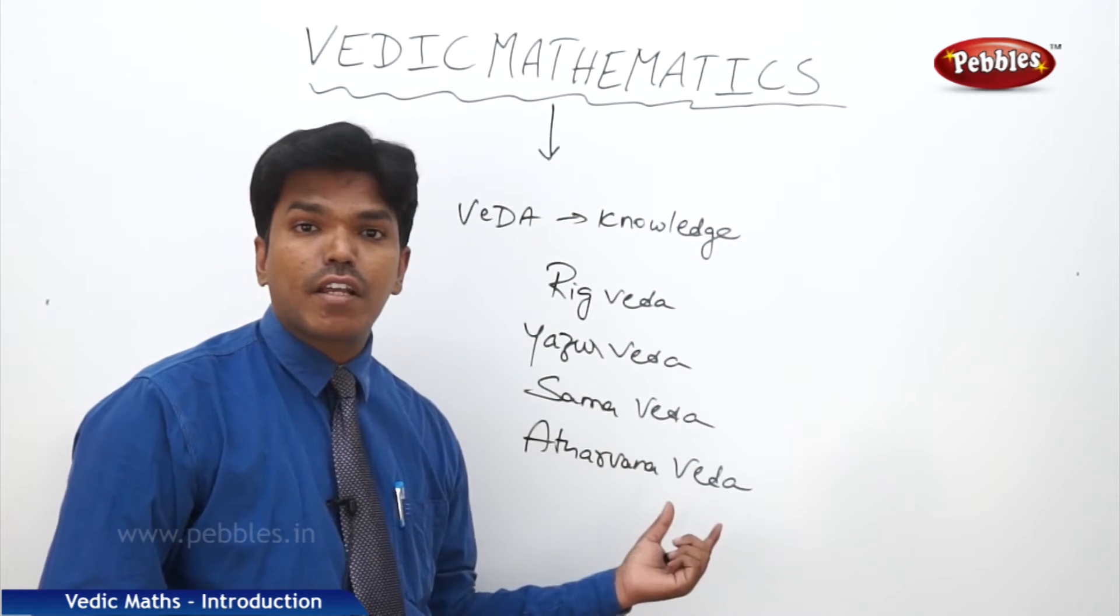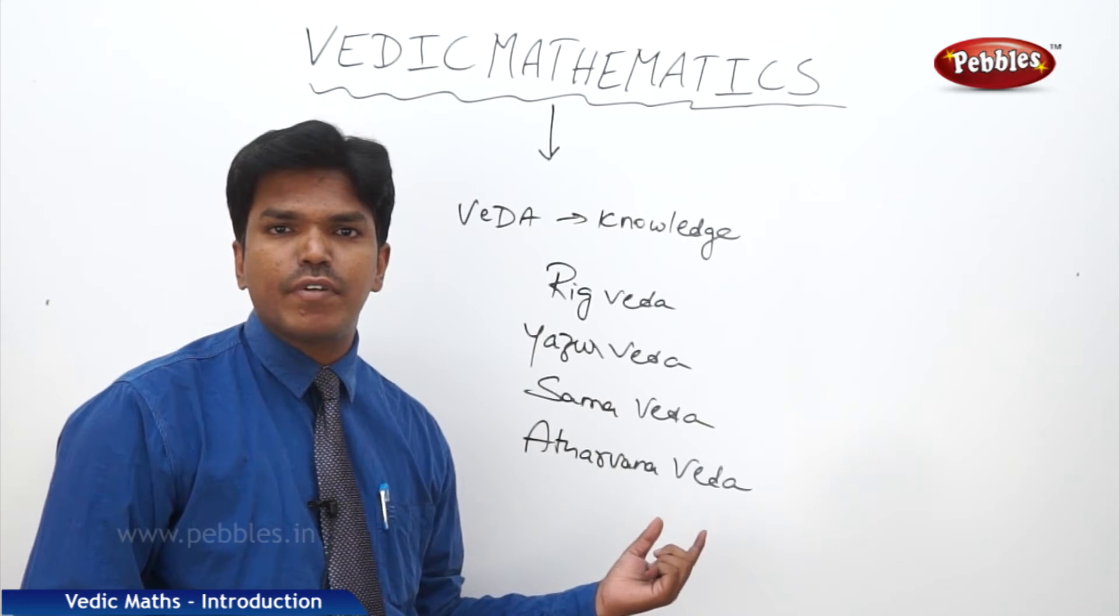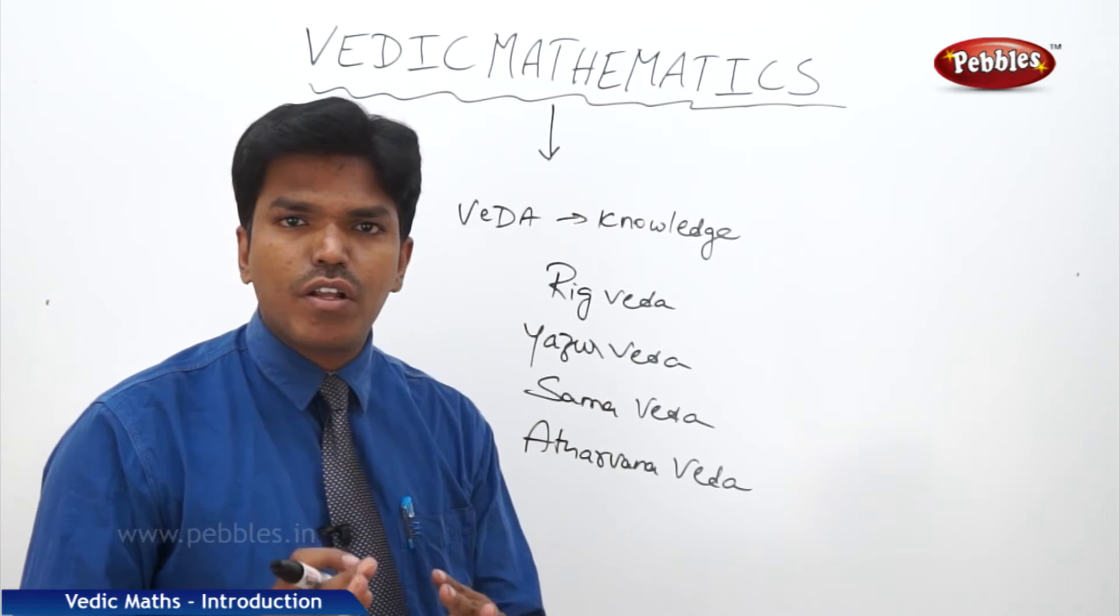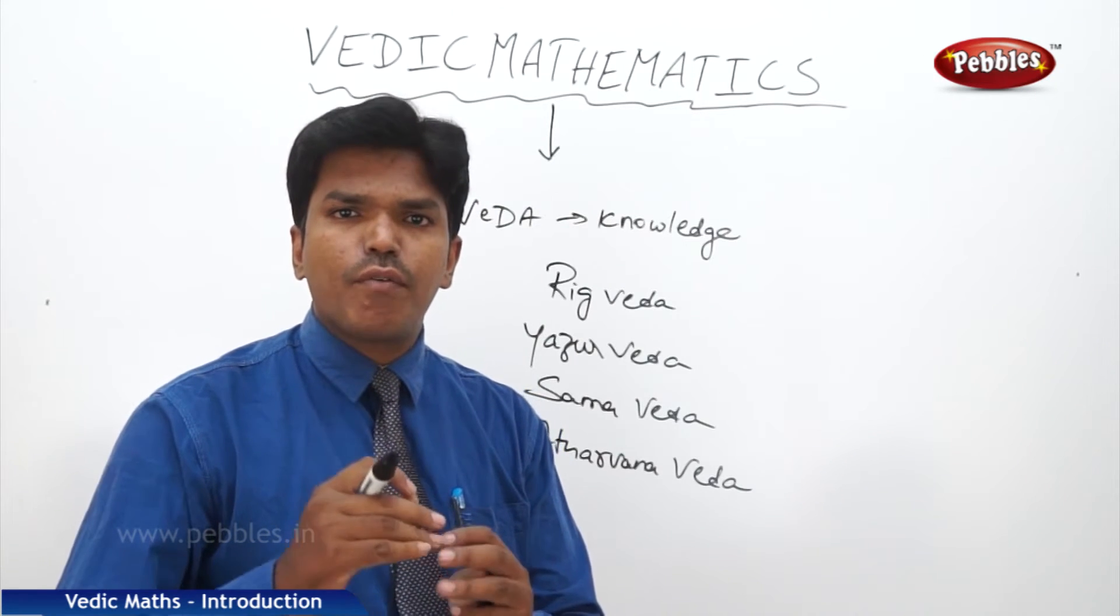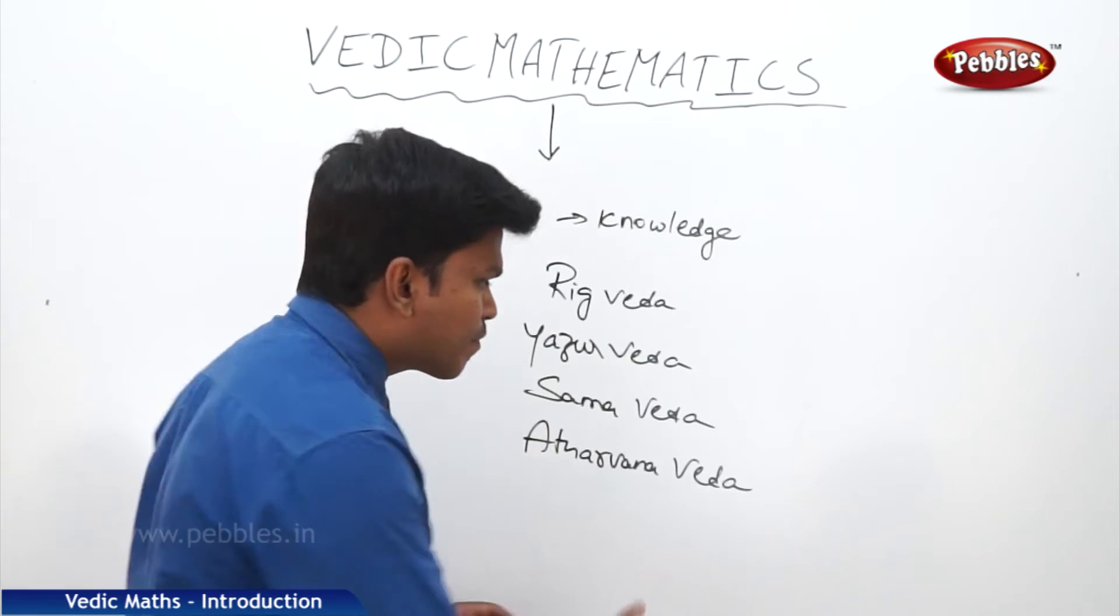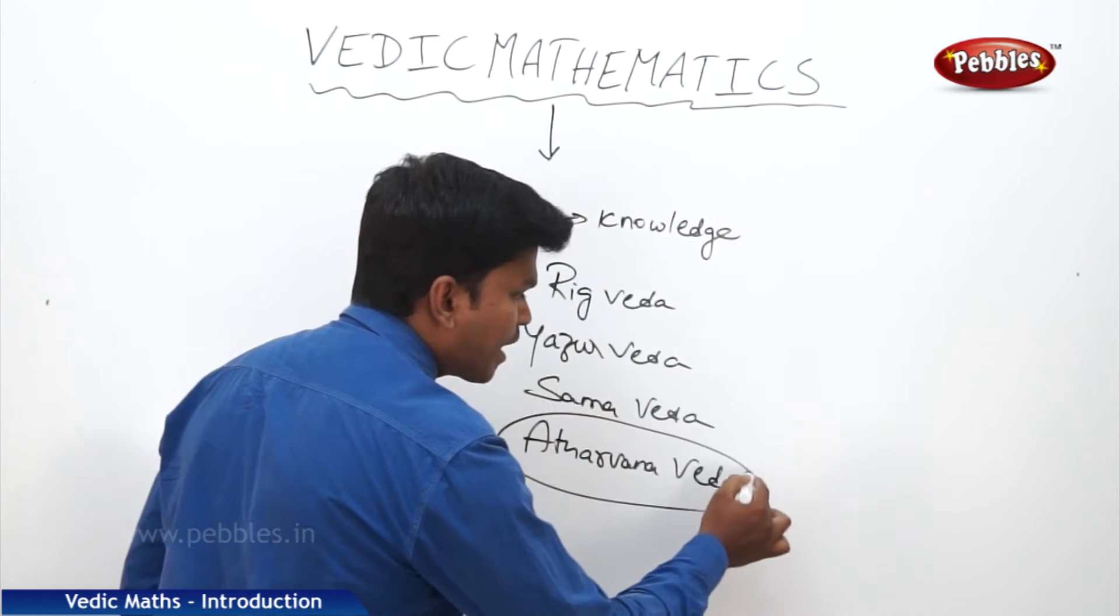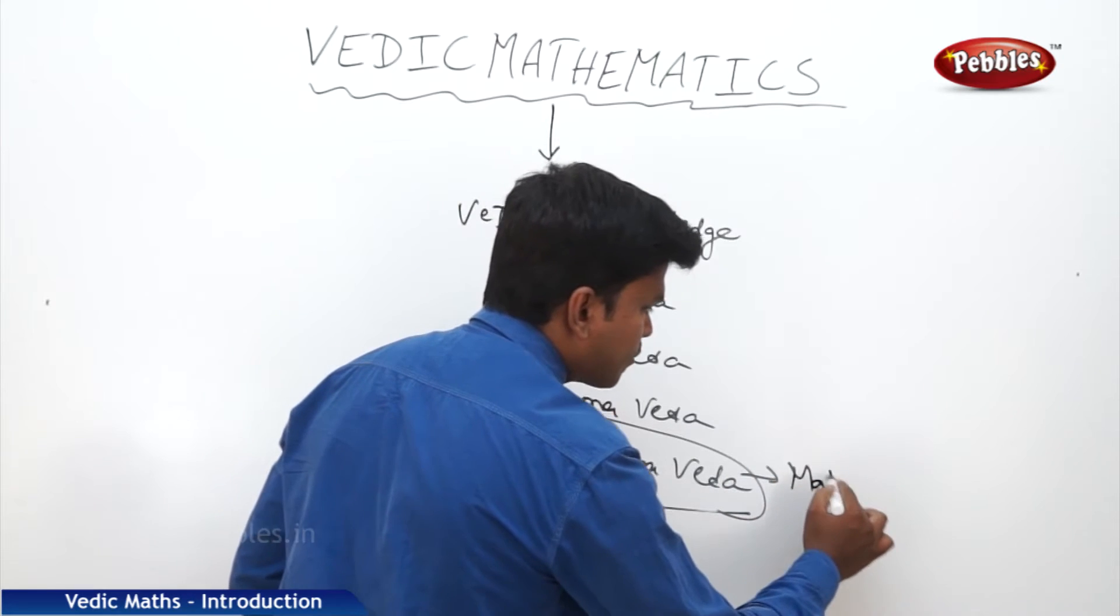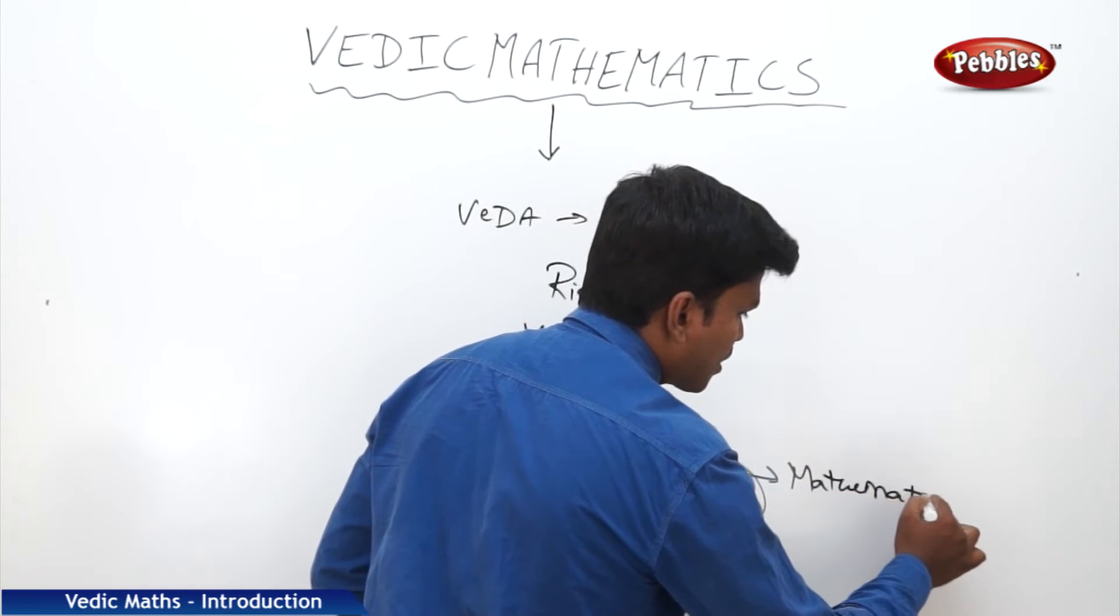So the fourth Veda, Atharvana Veda, this is the base for all the science, technology, architecture, and even the mathematics also. From this fourth Veda, we have taken the mathematics.